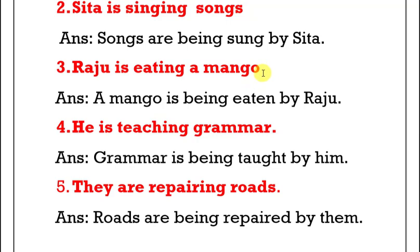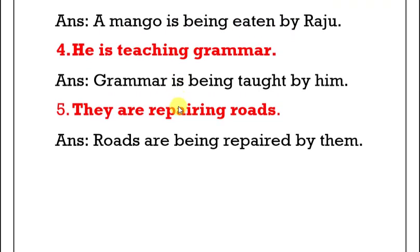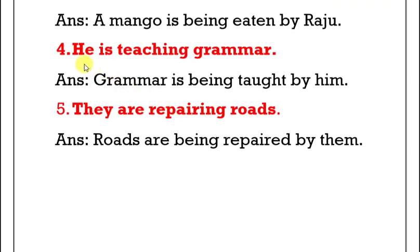Next example: choose a helping verb. 'A mango is being...' What is the V3 form of eating? Eaten. So: 'A mango is being eaten by Raju.' This is the passive voice transformation.